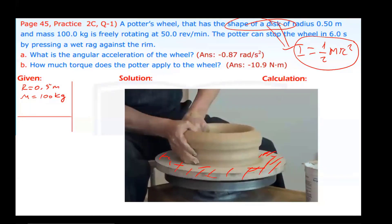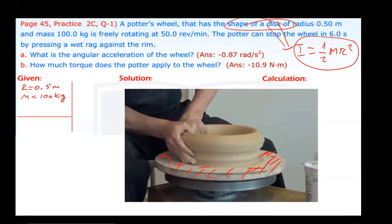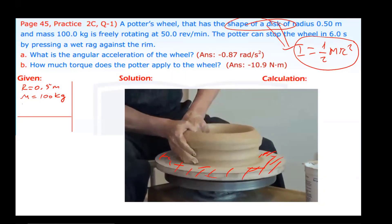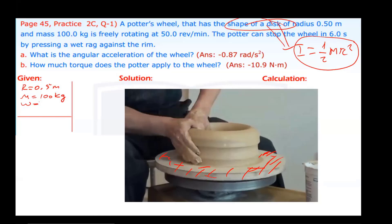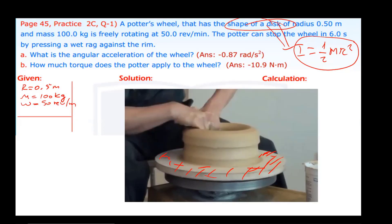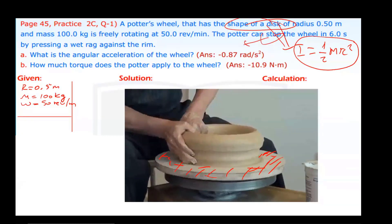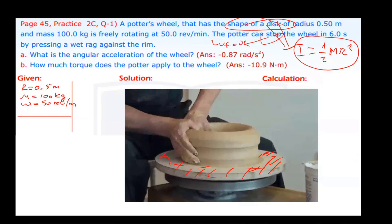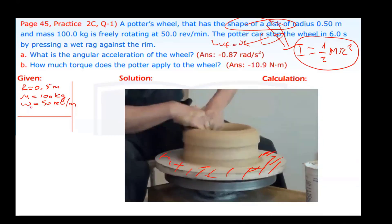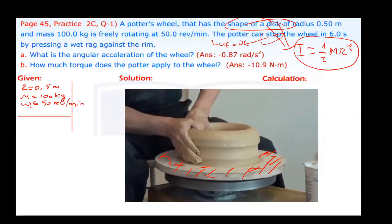The wheel is freely rotating at 50 revolutions per minute — that's the angular speed omega, given in revolutions per minute. The potter can stop the wheel in 6 seconds. What does stop mean? Final angular speed must be equal to zero. This 50 revolutions per minute is the initial angular speed.